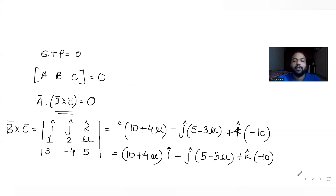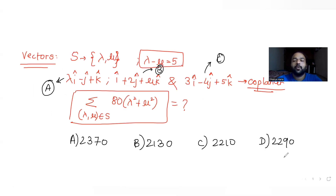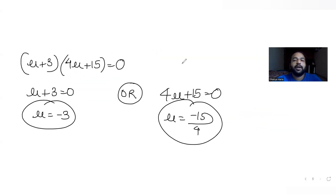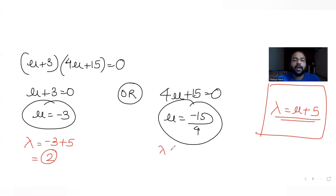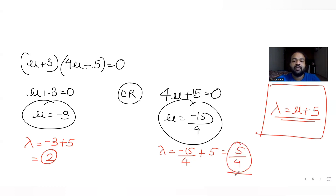Using lambda = mu + 5: when mu = minus 3, lambda = minus 3 + 5 = 2. When mu = minus 15/4, lambda = minus 15/4 + 5 = (minus 15 + 20)/4 = 5/4. So we get two pairs: (lambda, mu) = (2, minus 3) and (lambda, mu) = (5/4, minus 15/4).